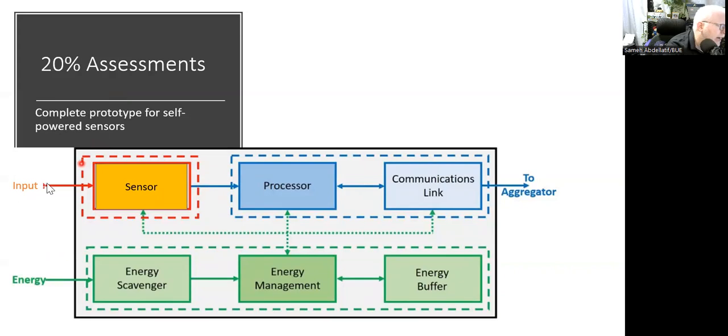You can see from this slide, this is a typical model for a self-powered sensor, where we have an input signal for a sensor. We have a processing unit and we have a communication link, which can be an optical link or an RF link. And in power, we have an energy management system, including an energy harvester, an energy management circuit, interfacing circuit. And sometimes maybe you can use a buffer or a storage system. So your focus will be here to build a complete prototype for an energy harvester.